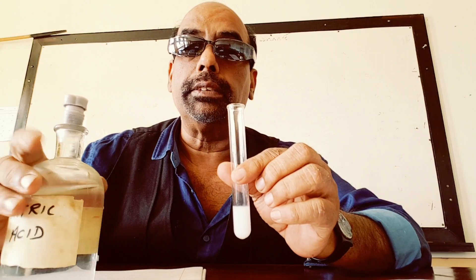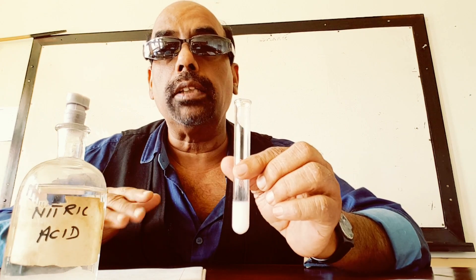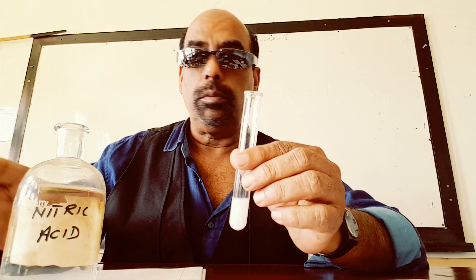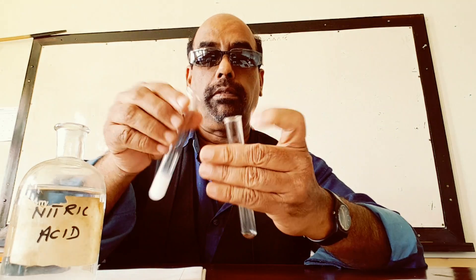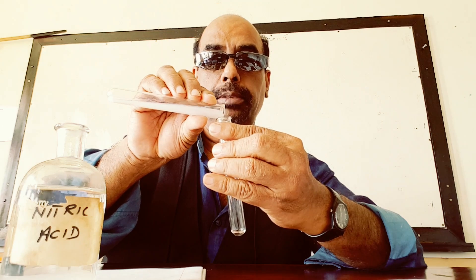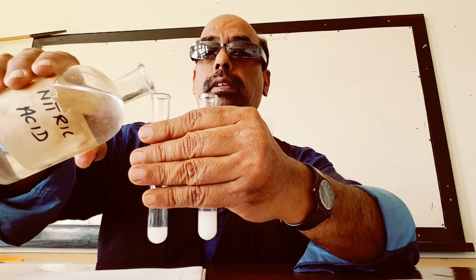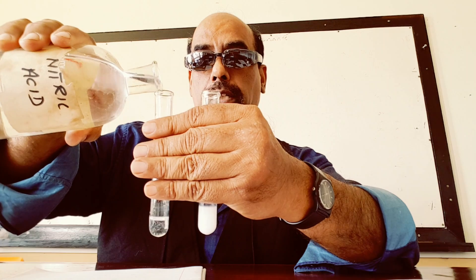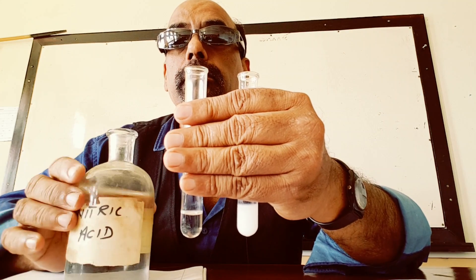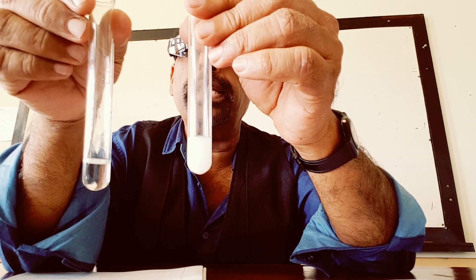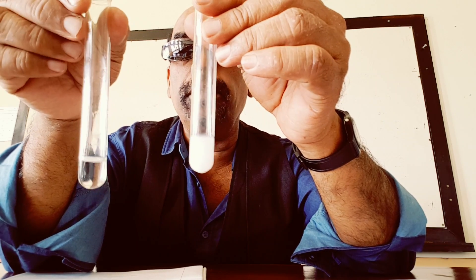It could be barium sulfite or barium sulfate. So how do we differentiate between sulfite and sulfate? We add a small amount of nitric acid. If the precipitate dissolves, it is sulfite. If the precipitate does not dissolve, it is sulfate. We add a small amount of nitric acid to the precipitate formed. When nitric acid is added, the barium sulfite reacts with the nitric acid, forming barium nitrate, and sulfur dioxide is released.